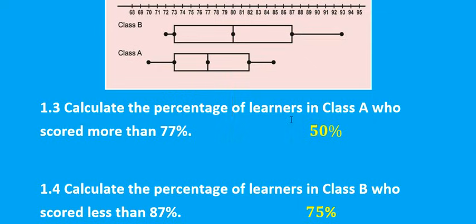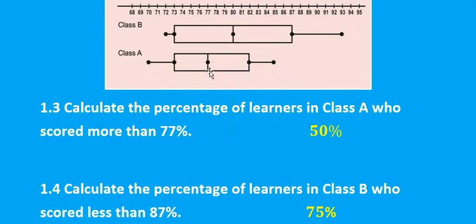For question 1.3, calculate the percentage of learners in class A who scored more than 77%. Looking at the number line, 77% is at Q2 for class A. So the question is asking for the percentage of learners who scored more than Q2. That would be the two sections above Q2, giving us 25 plus 25, which equals 50%.